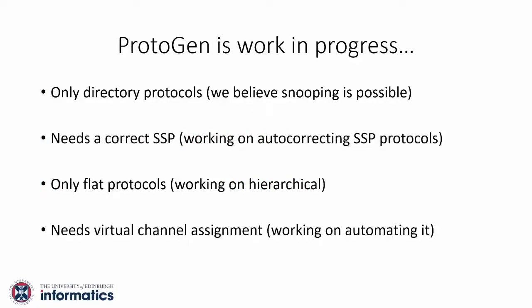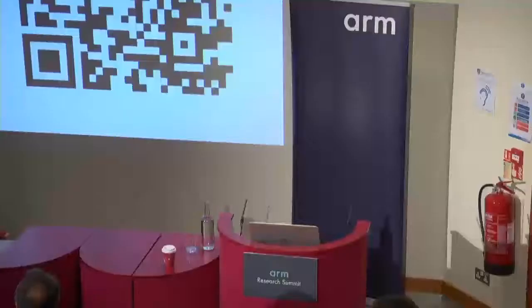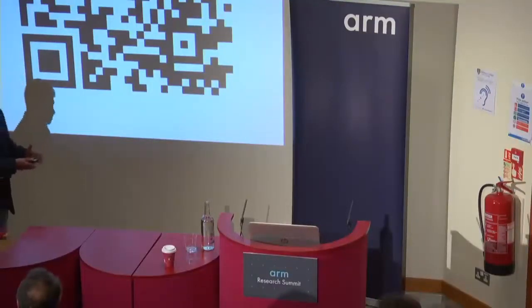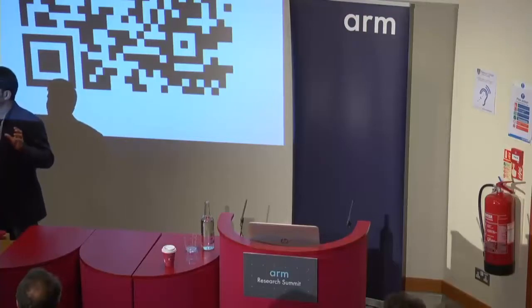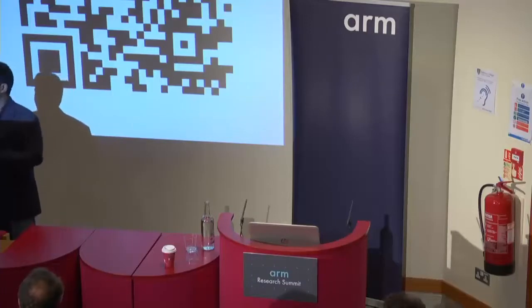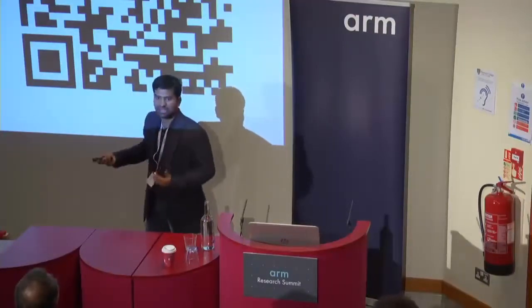Protogen is work in progress — there are a bunch of limitations we are actively working on, though we do not view these as fundamental, mostly as things that need to be developed. With that we come to the end of the talk. Protogen is a tool that makes cache coherence protocols tractable: given a stable state protocol — an atomic specification — it automatically produces a highly concurrent non-blocking one. The key insight is that the problem of converting a stable state protocol into a non-blocking concurrent protocol is equivalent to converting a sequential specification into a highly concurrent implementation, but the linearization point is provided, which is why we can automate this. We have more details in our ISCA paper and code available with the DSL and compiler. Please try it out.